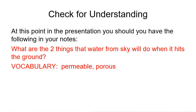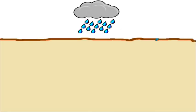First check for understanding: what are the two things that can happen to water that falls from the sky when it hits the ground? And know these two P-word terms — permeable and porous. Now we're going to focus on the water that goes into the ground; we'll look at runoff water later.